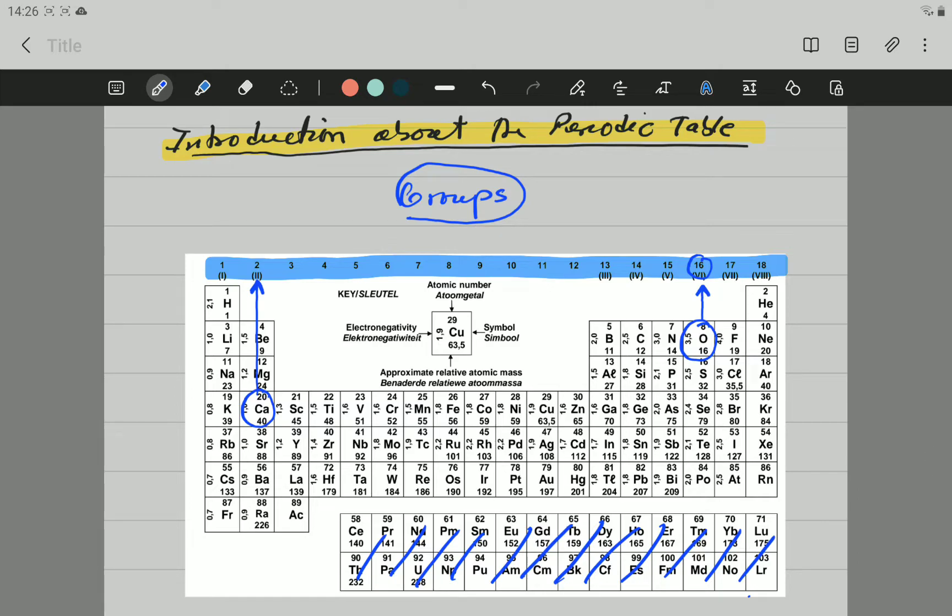However, the Periodic Table is also organized in periods. Now, the periods are going to be the horizontal rows. For example, this one here is one period in the Periodic Table. This is another period. And now, if we want to top this one, or this one from side to side, is another period. So, you can see, in the Periodic Table, starting from top,